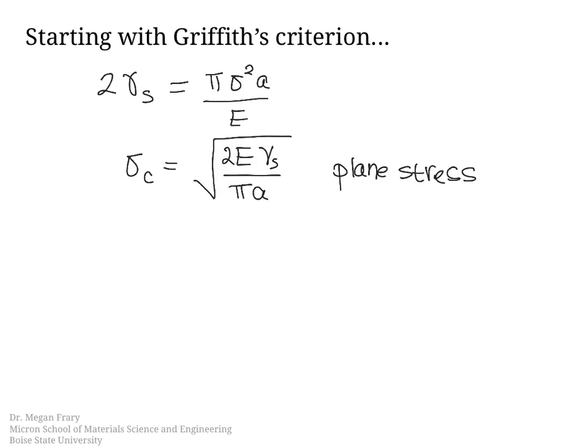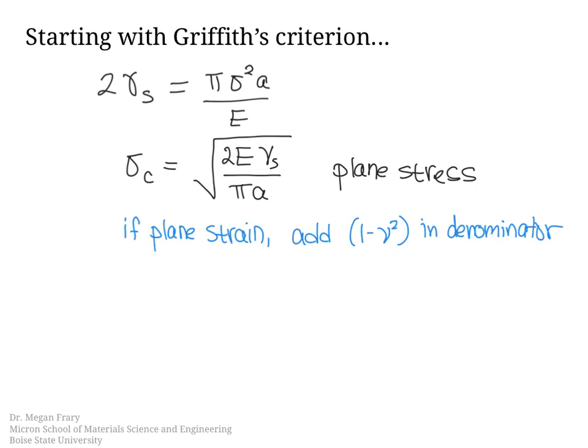If we are in the plane strain condition, then we add the term 1 minus nu squared in the denominator. The Griffith Criterion gives us essentially the critical stress where the crack will begin to propagate depending on material properties and crack geometry. It did not, however, consider what would happen if there was also plastic deformation occurring in the material. So let's look at that next.